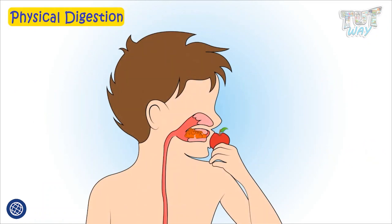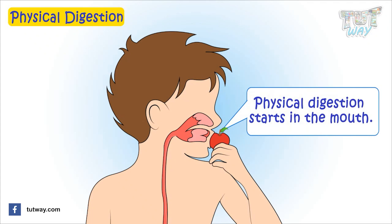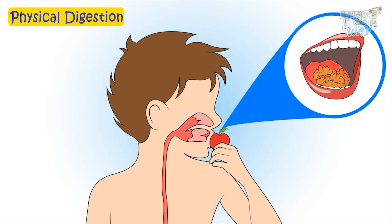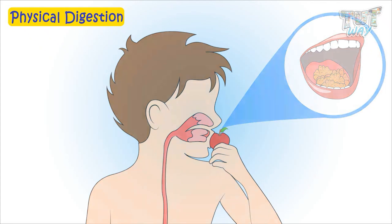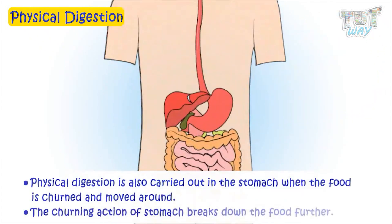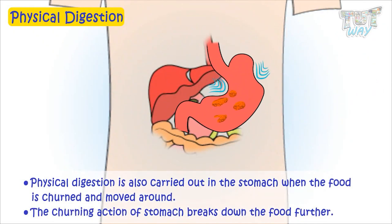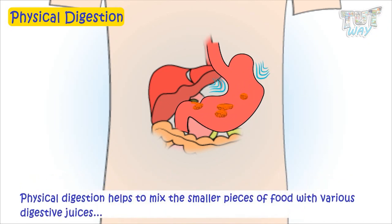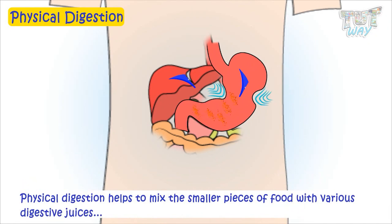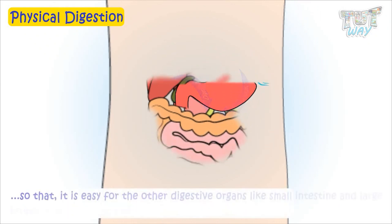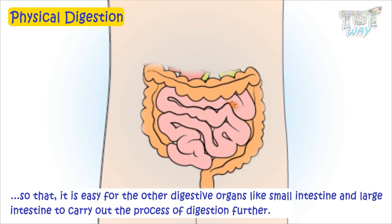Physical digestion is the breakdown of larger pieces of food into smaller pieces. It starts in the mouth when food is chewed with the help of teeth and tongue, and is also carried out in the stomach when food is churned and moved around. The churning action of the stomach breaks down food further and mixes smaller pieces with various digestive juices, making it easier for organs like the small intestine and large intestine to continue digestion.